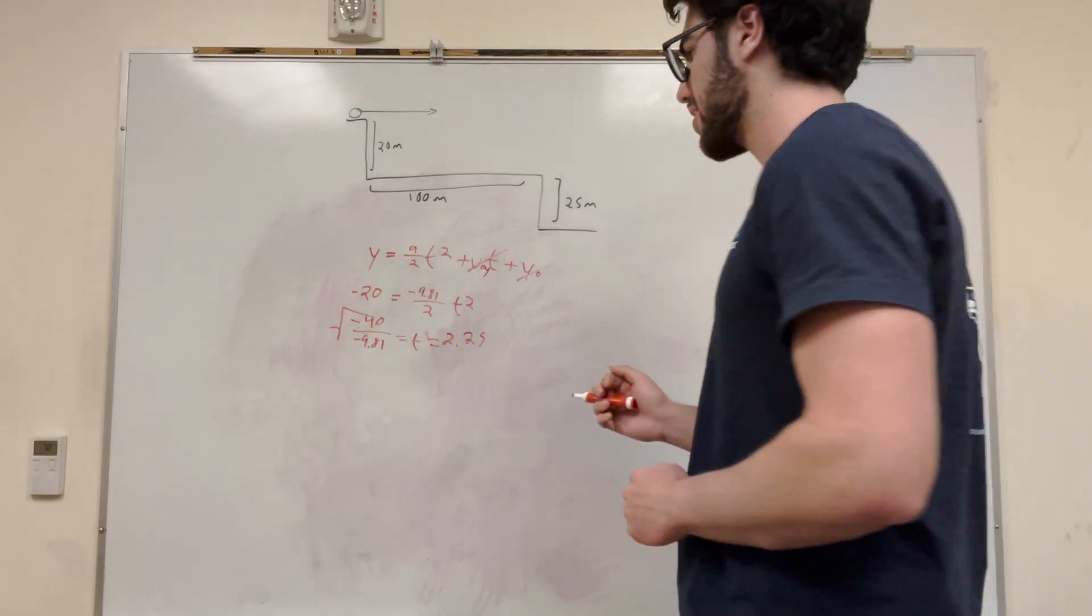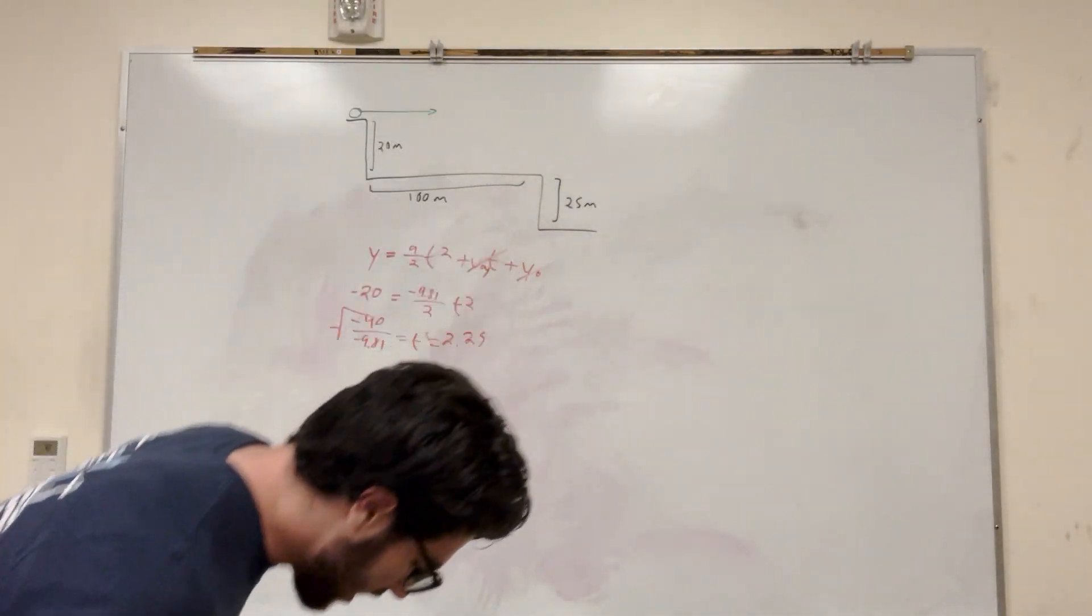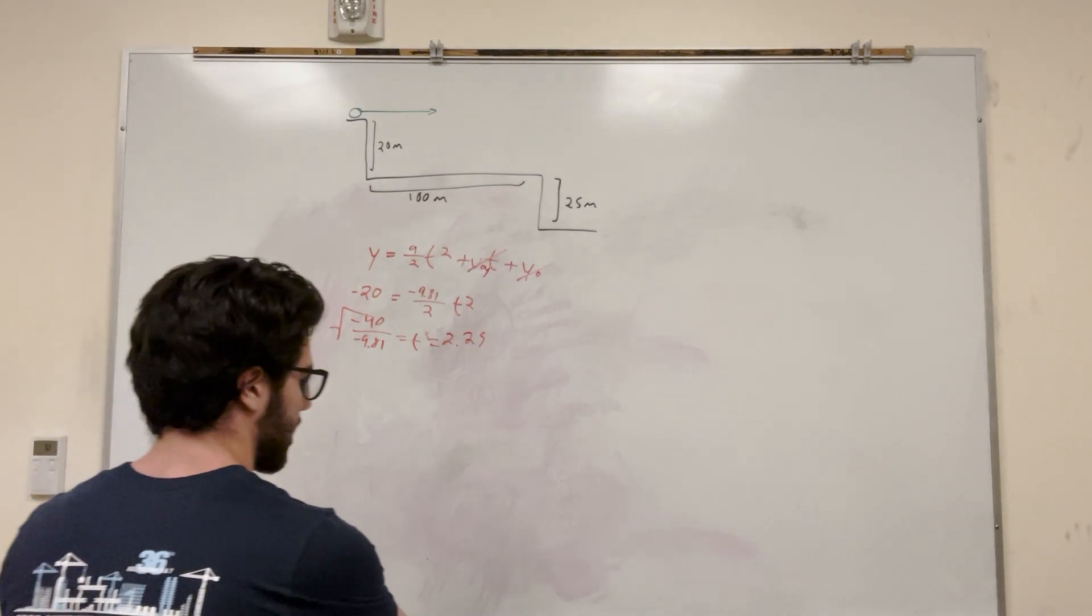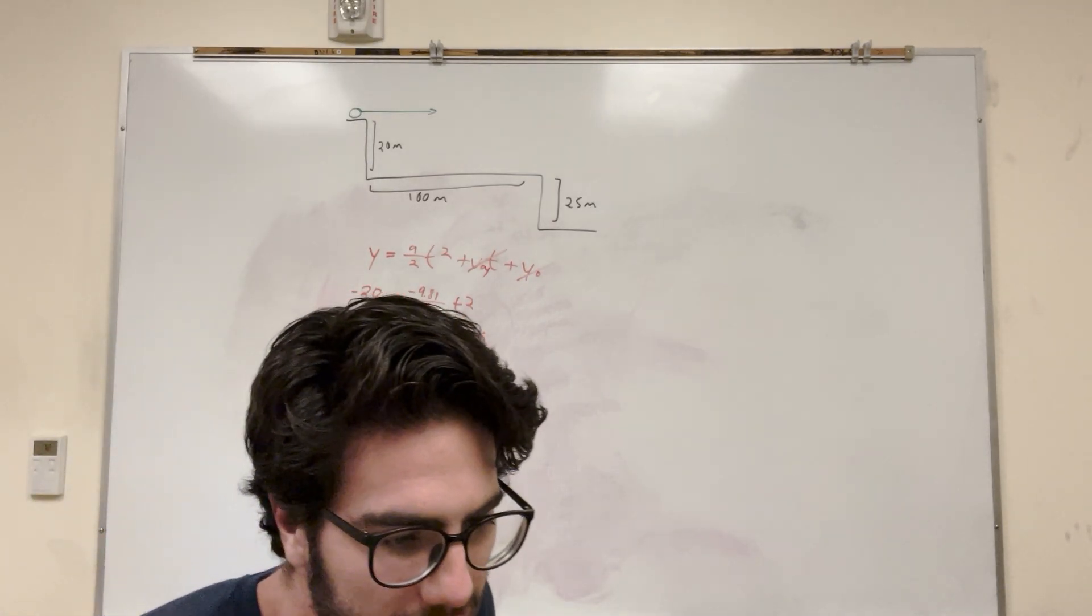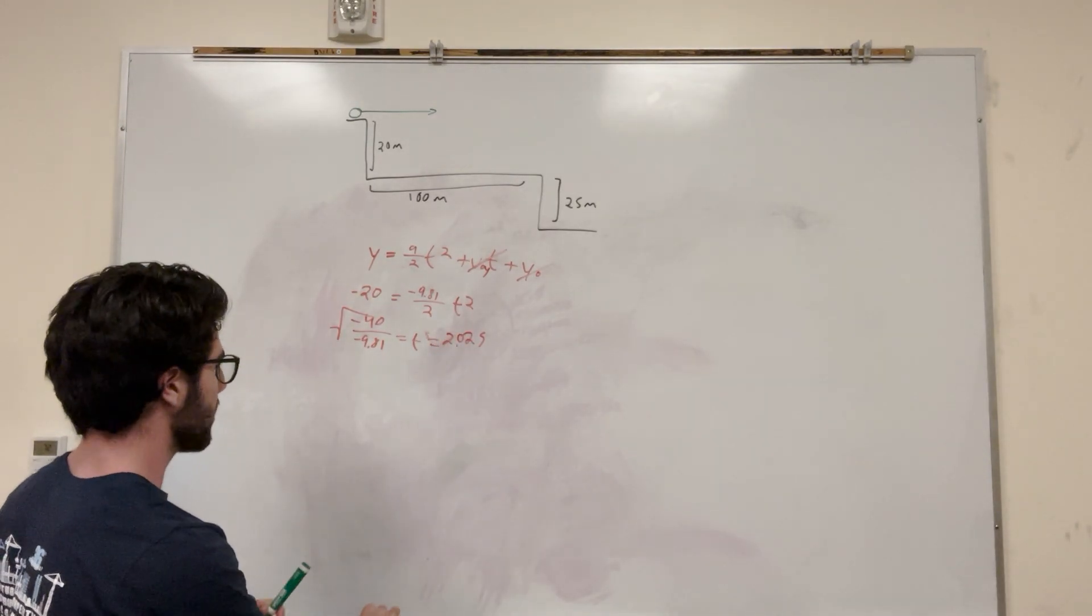Okay, so now we know how long it takes to fall that long. So now what we can do is we can put over in our x direction. Okay, so how long it's going to go in 2.2 seconds? Oh, never mind. That's the wrong number. 2.02. I wrote it down wrong.